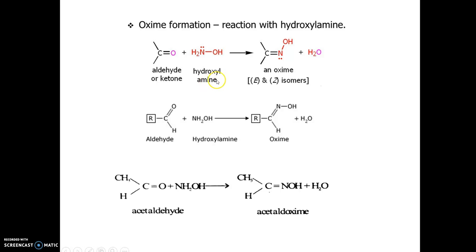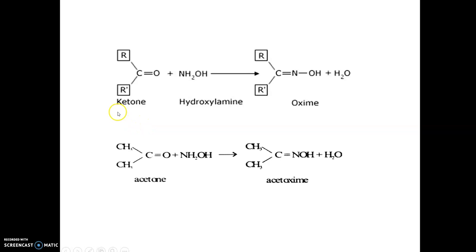Coming to the details of the reaction with hydroxylamine: the carbonyl group reacts with hydroxylamine, NH₂OH. We can see a lone pair of electrons on the nitrogen. The addition product — the oxime — can exist in two isomers, E and Z, with the elimination of a water molecule. For example, acetaldehyde reacts with hydroxylamine to give acetaldoxime. Similarly, ketone also reacts with hydroxylamine to give the corresponding oxime — for example, acetone reacts with hydroxylamine to give acetoxime.